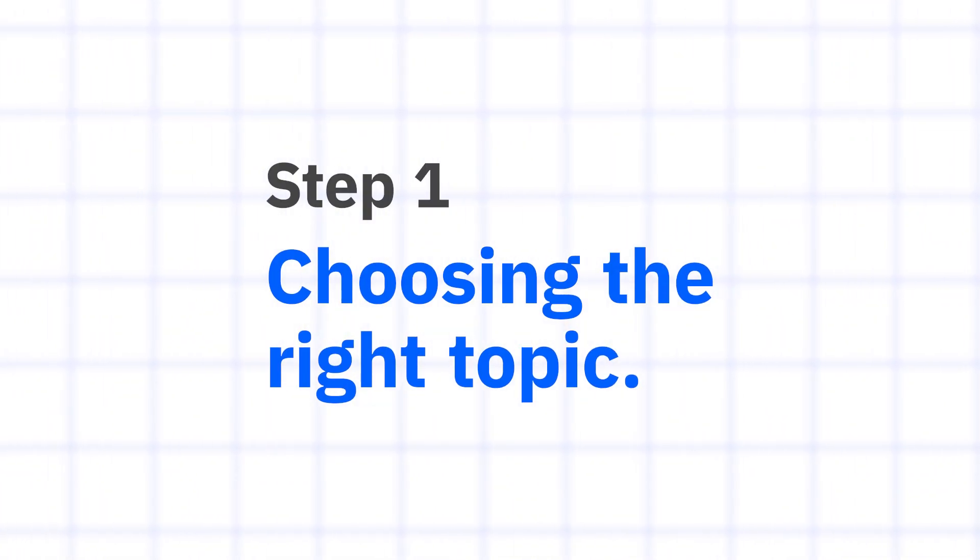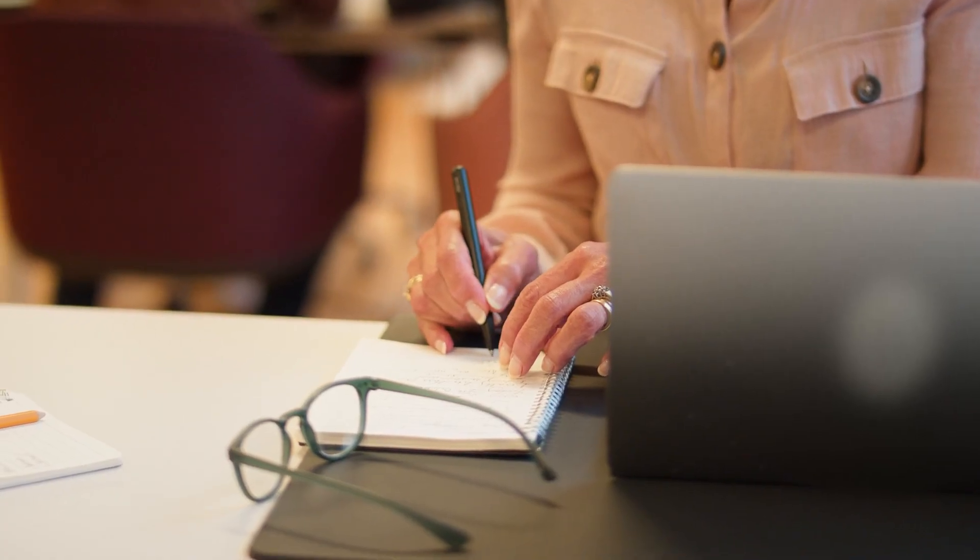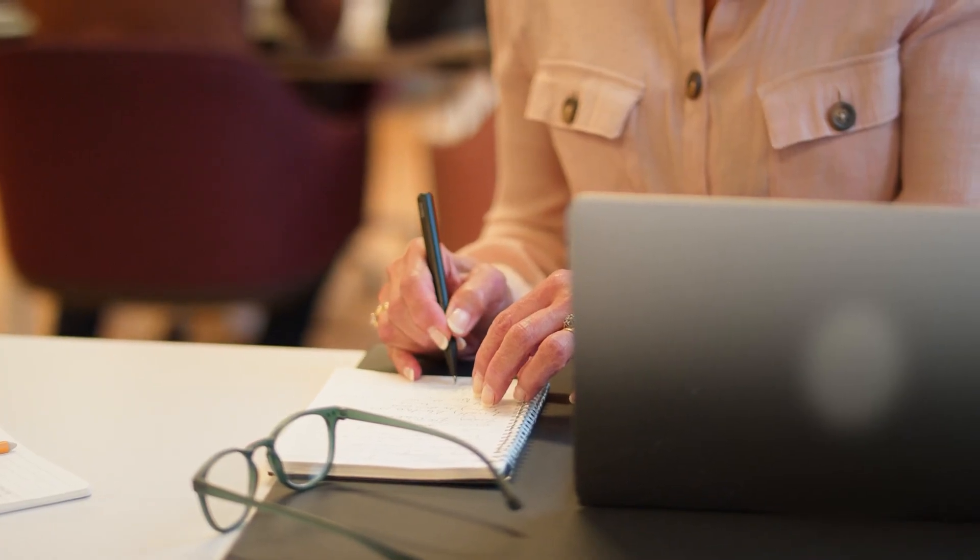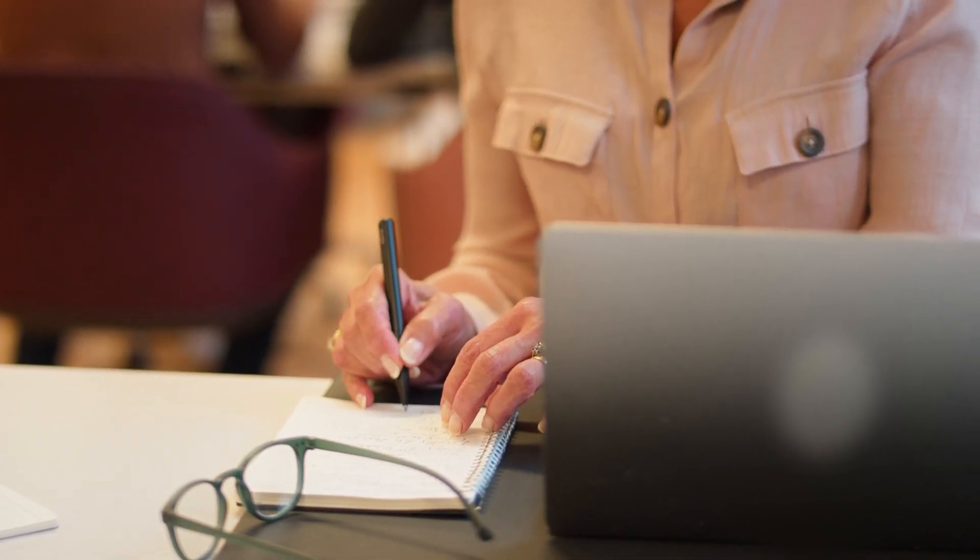Now that we fully understand what a research proposal is, our next question is how to start writing one. Step 1: Choosing the right topic. Choose something you find interesting but also make sure it's practical, not too broad and not too narrow. A good way to start is by reading recent articles or papers in your field. Look at what's already been done and find out the questions that are still left to answer.